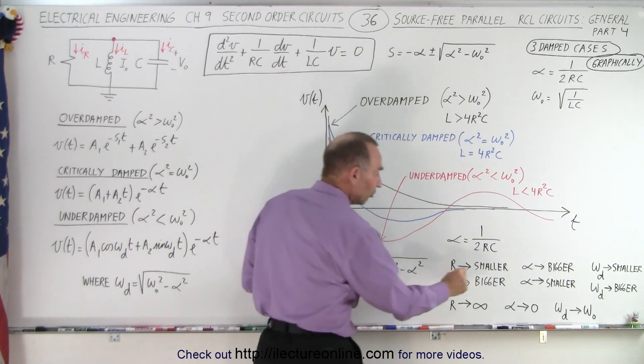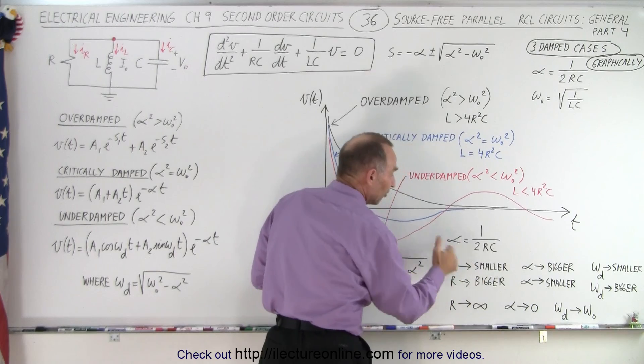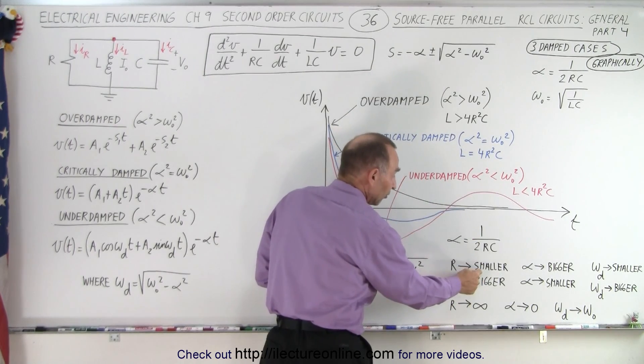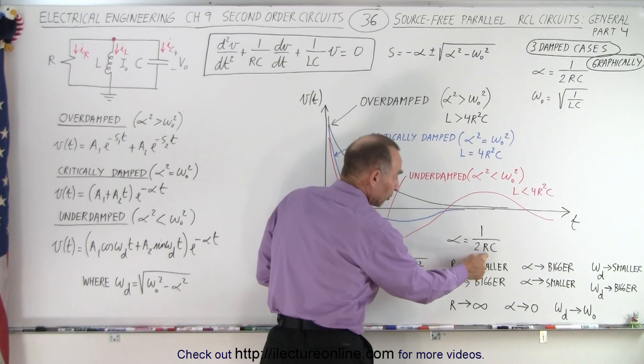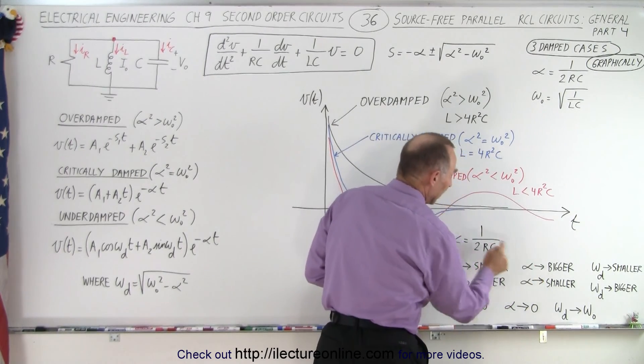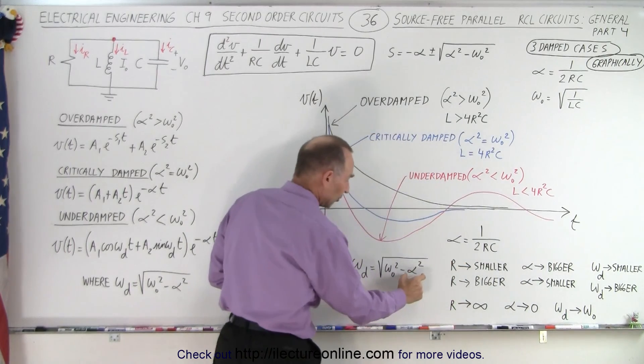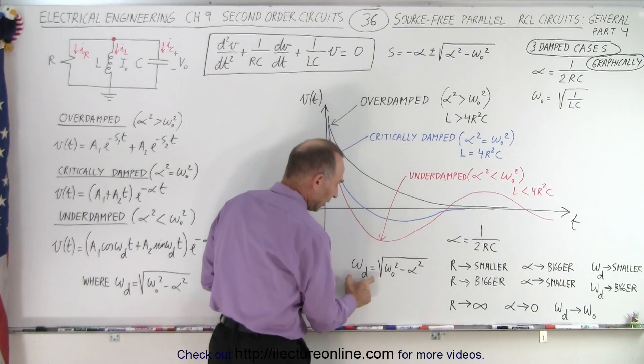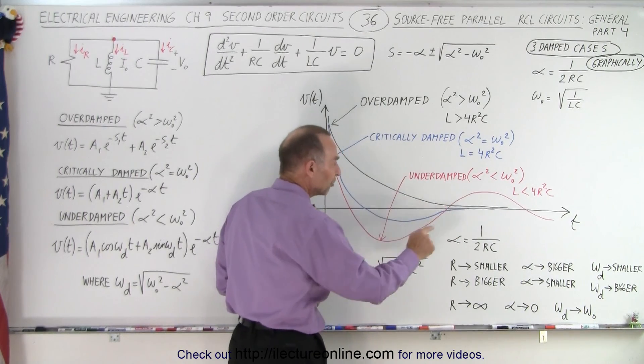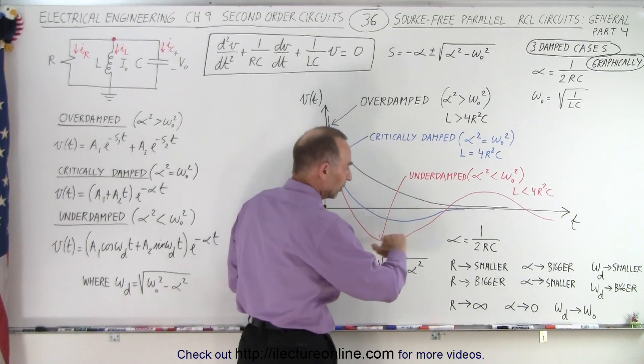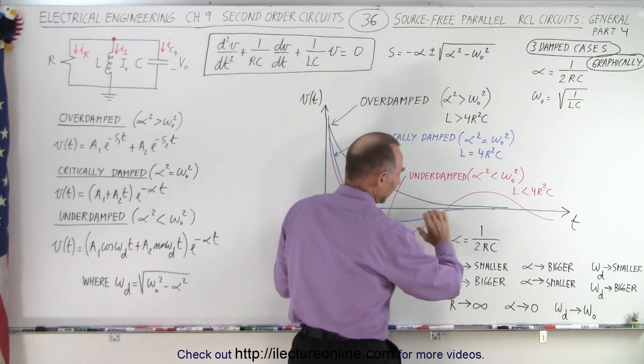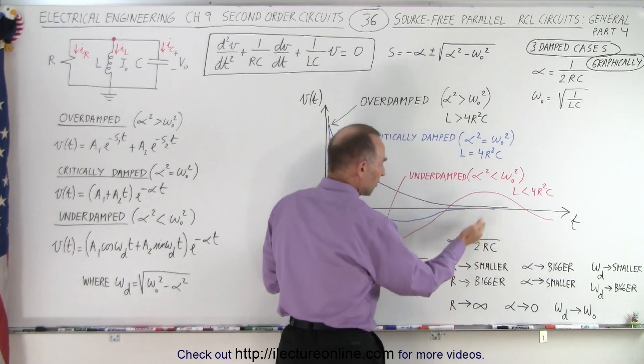If the resistance is smaller, a smaller resistance is still large enough to have an underdamped case, but notice a smaller resistor gives you a larger alpha. Alpha will be bigger. And if alpha is bigger, when we subtract the bigger number from omega sub-naught, the damped frequency of oscillation will be smaller. A smaller oscillation means that this will be stretched out. The more it gets stretched out, the smaller you make resistance.